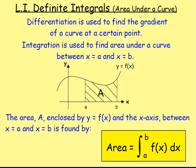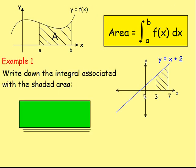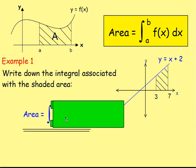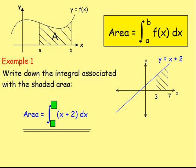Let's try some examples. Example number one: write down the integral associated with the shaded area. Looking at this example, how would you work out the area enclosed by the line y equals x plus 2 and the x-axis between 3 and 7? All you'd want to do is write the area equals the integral of x plus 2, with lower limit 3 at the bottom and upper limit 7 at the top. In a few examples' time I'll show you how to work that out.